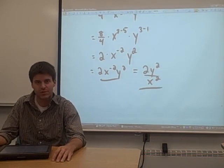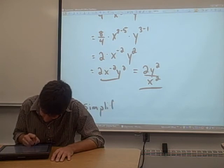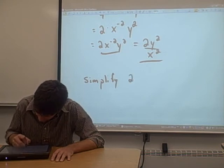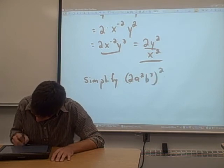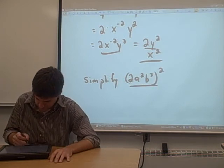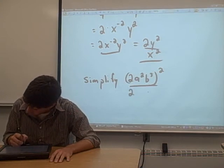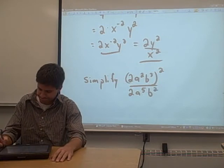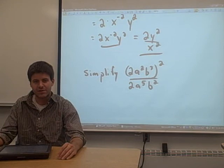Why don't you try one on your own? Why don't you try to simplify 2a squared b cubed squared over 2a to the fifth b squared. See if you can simplify that as far as you can and come back and see how you're doing.